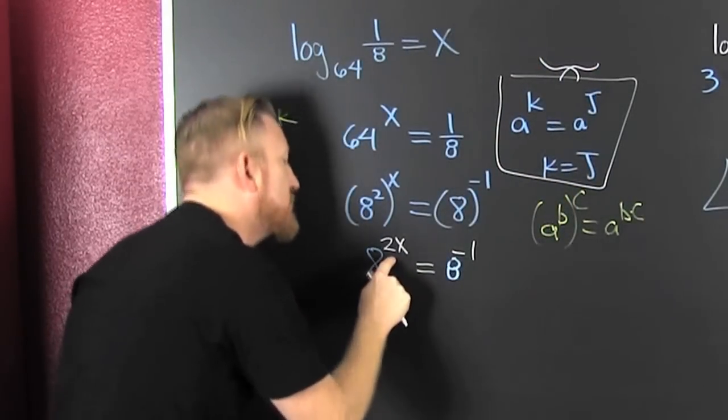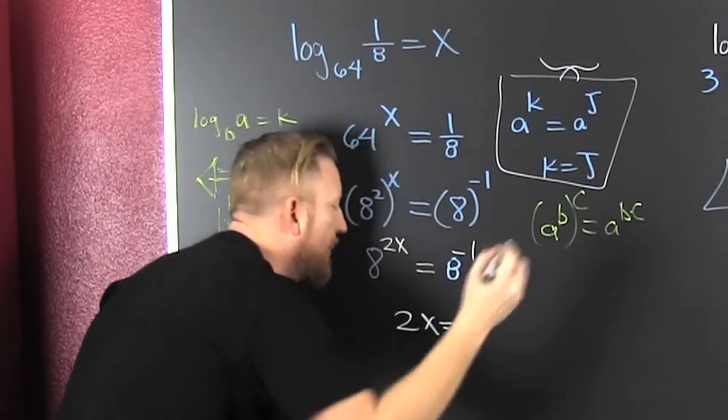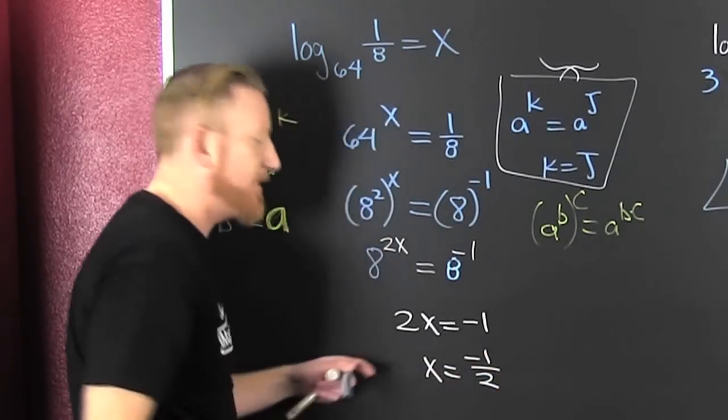Now, what do I have? I have 2x is equal to minus 1. So 2x is equal to minus 1. Finish him. X is equal to minus 1 half. And then what? You know.